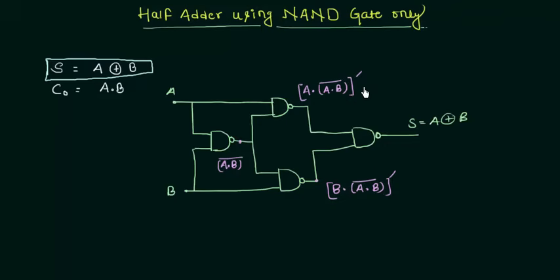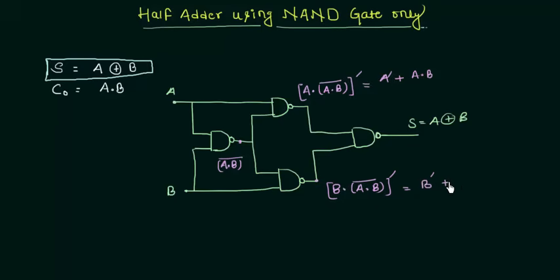Let's simplify it a bit so we can see what we actually have. We will use De Morgan's law to expand it. So we are having A complement — the AND operation changes to OR — and the complement of complement gives us A AND B. Similarly, the other branch gives us B complement OR A AND B.